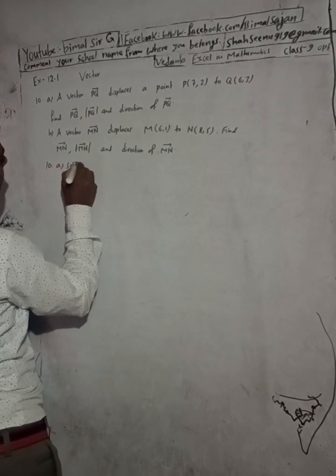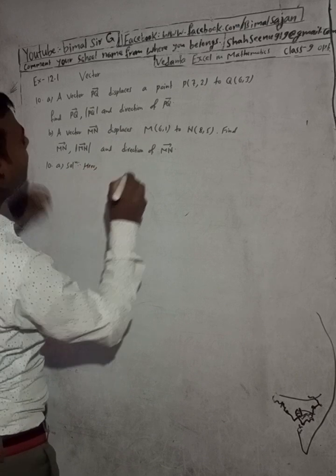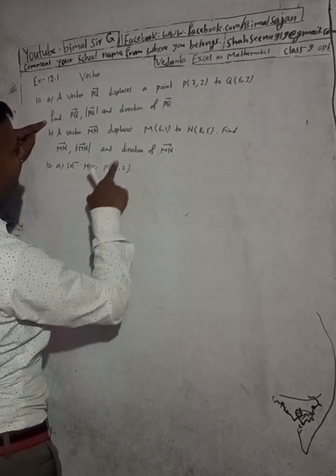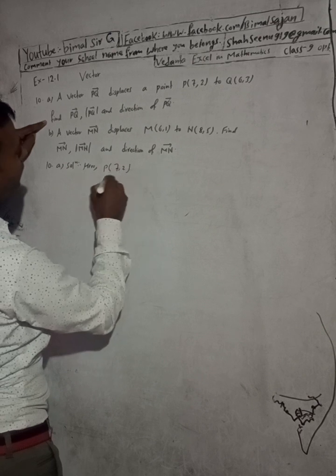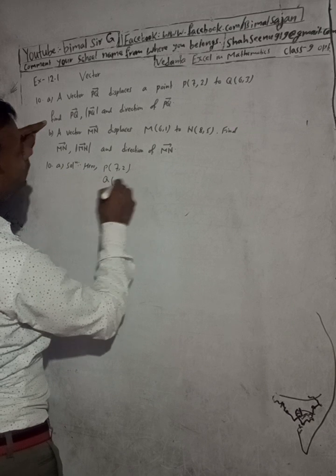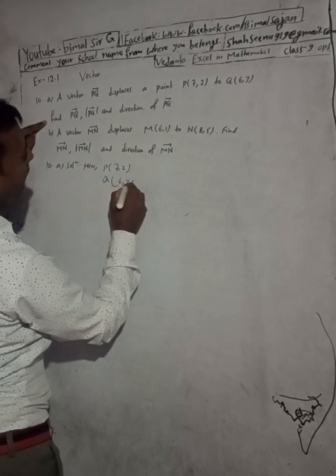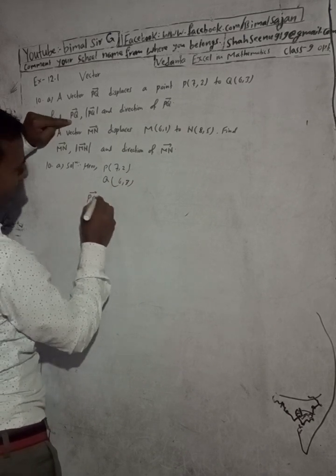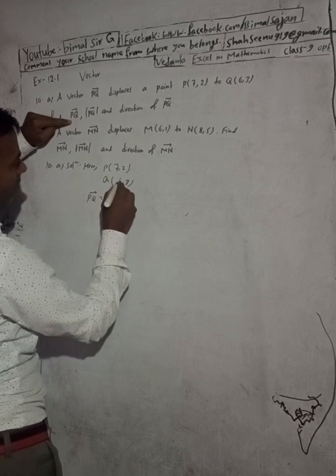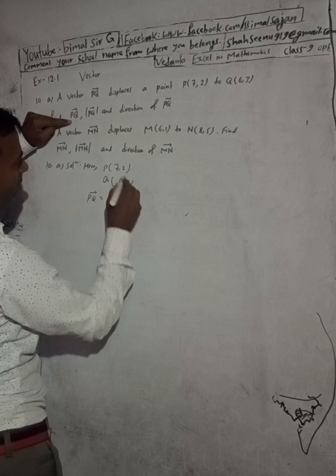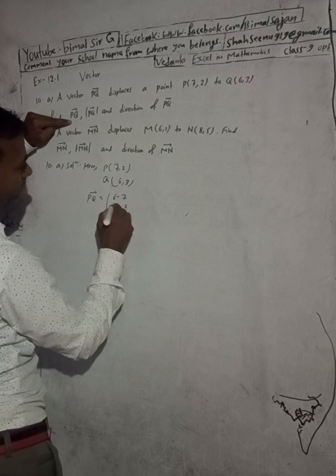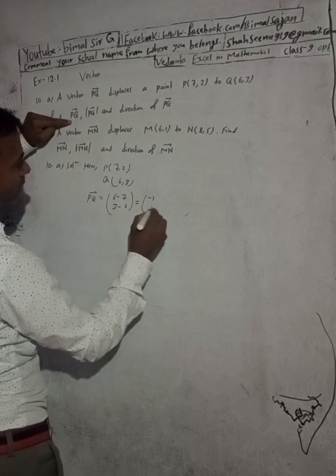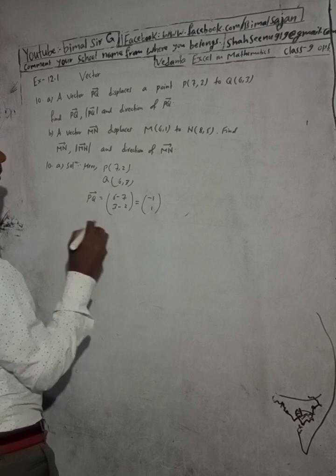Here P is (7, 2) and Q is (6, 3). So the PQ vector is equal to Q minus P, that is (6 minus 7) and (3 minus 2), which gives us minus 1 and 1. So PQ vector equals (-1, 1).